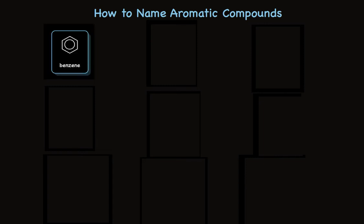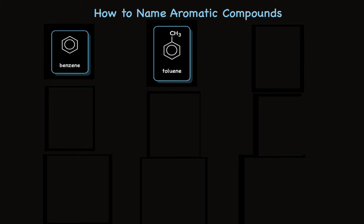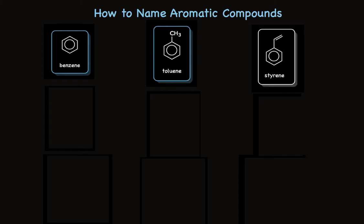Take a look at these key monocyclic aromatic compounds. You're already expecting the first one to be benzene — it's a hydrocarbon, six-membered ring. When a methyl group is on there, we call it toluene. And when we put a vinyl group on there, we call it styrene.